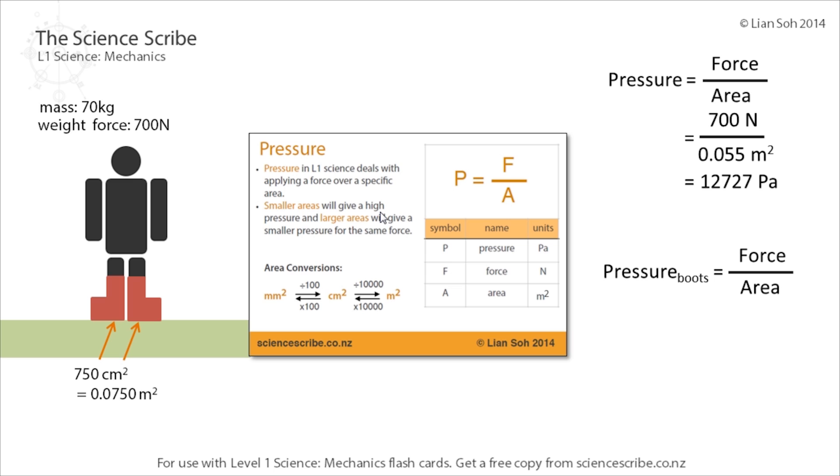If we divide by 10,000 again using the area conversion, that gives us 0.075 meters squared. If we wanted to work out the pressure, we apply the formula P equals F over A again. His weight force still stays the same at 700 newtons; the area is larger now.